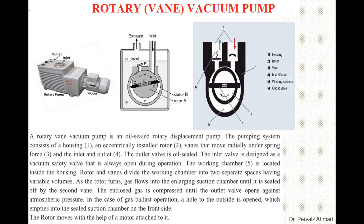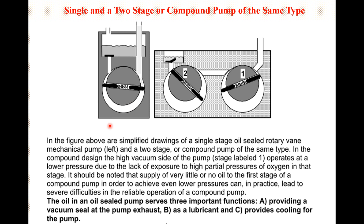Rotary vane pumps come in two types: single stage and double stage. The double stage is also called a compound pump and is designed for higher vacuum. Unlike the single stage, where we have a simple rotary vane oil-sealed mechanical pump, the compound pump is designed in two stages.